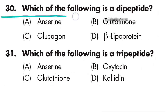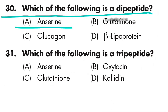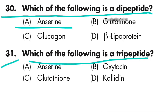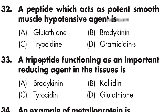Question 30: Which of the following is a dipeptide? — option A is right — anserine. Question 31: Which of the following is a tripeptide? — option C is right — glutathione.